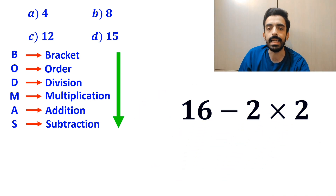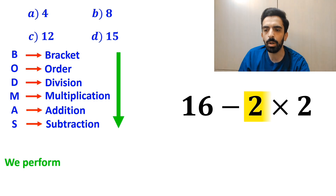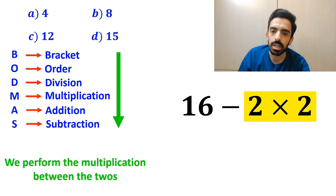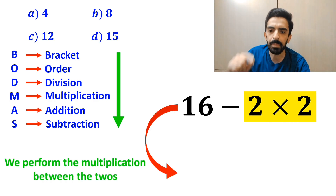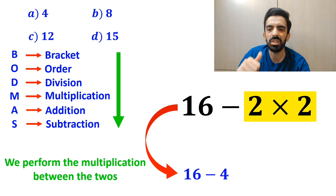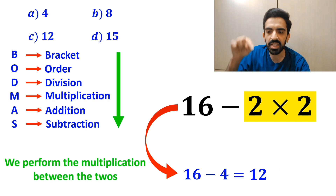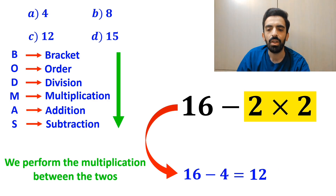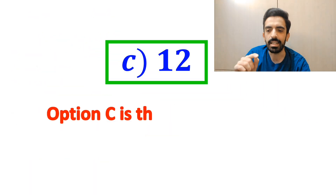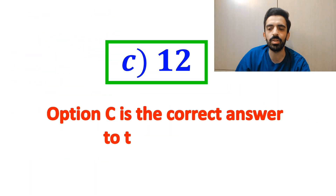And in the final step, we perform the multiplication between the 2s, which simplifies the expression to 16 minus 4. And finally, the value of this expression will be 12. Therefore, option C is the correct answer to this question.